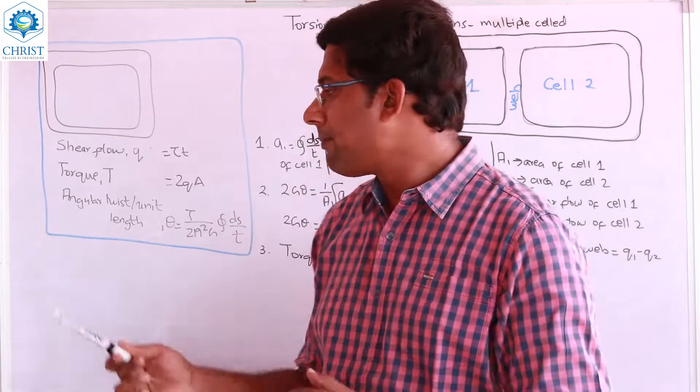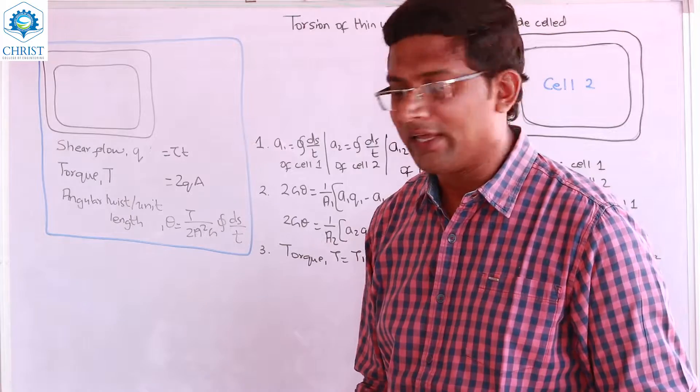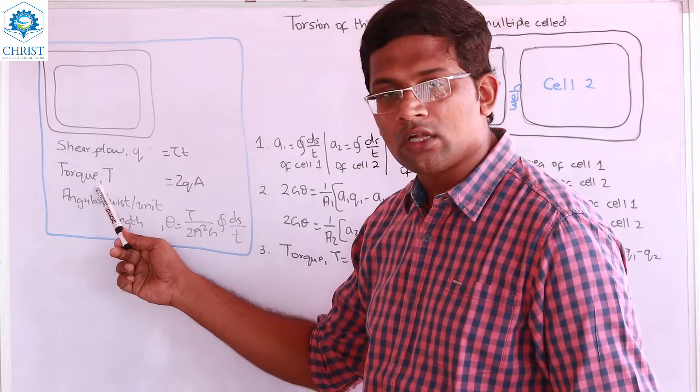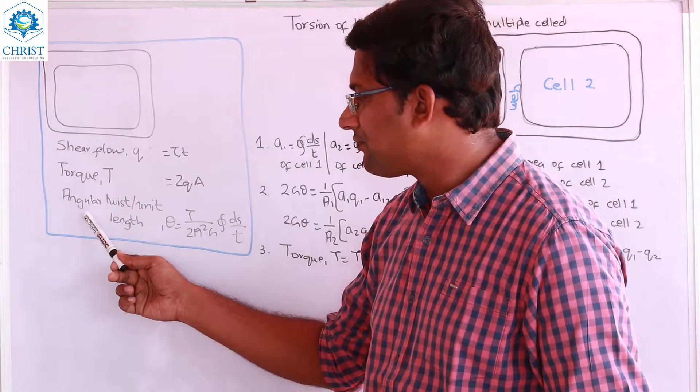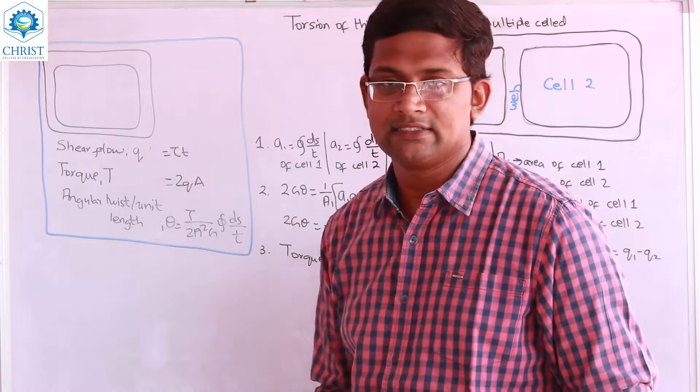There are three derivations. The first one is for the shear flow, then for the torque, and finally for the angle of twist per unit length.